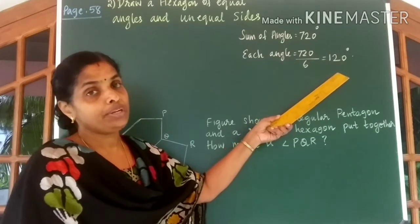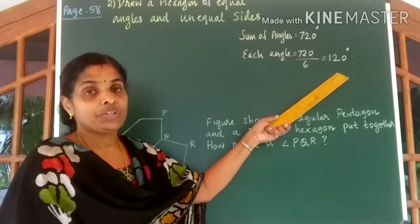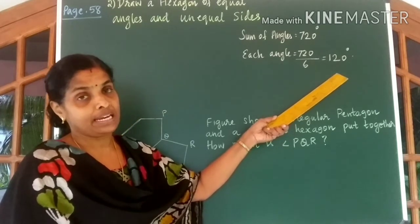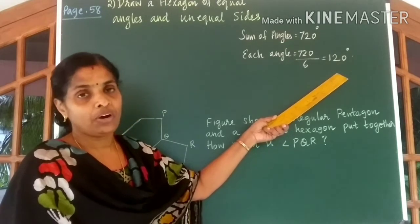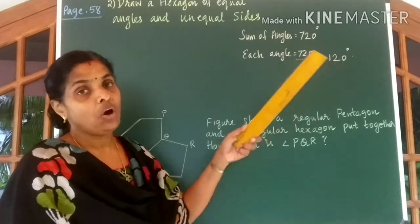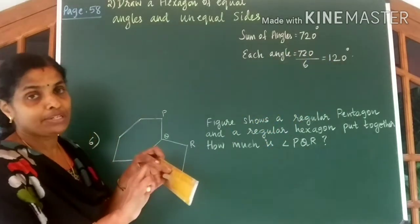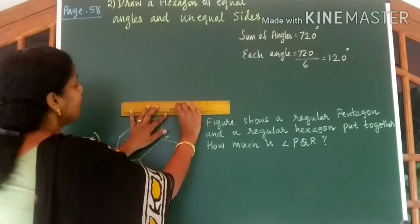Now we are going to draw a hexagon with all angles equal but not the sides. So first of all you draw a line of any measure. Let me draw a line of any measure.